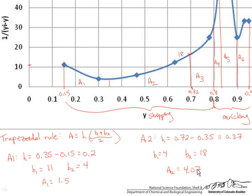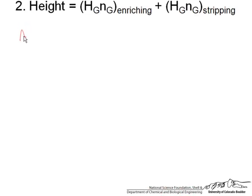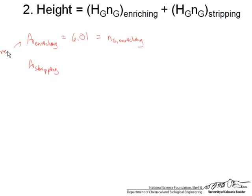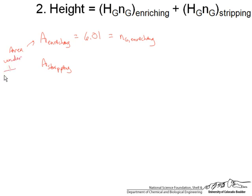So I did this for each of these areas and got A enriching equal to 6.01. And this equals NG enriching and A in the stripping. This is the area under the curve. So this is the area under the 1 over YI minus Y curve. So A in the stripping equals 7.57 equals NG in the stripping.